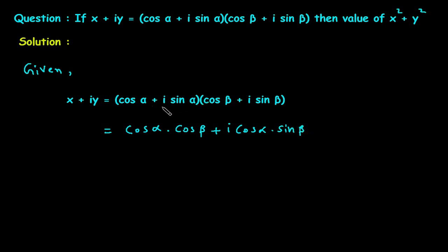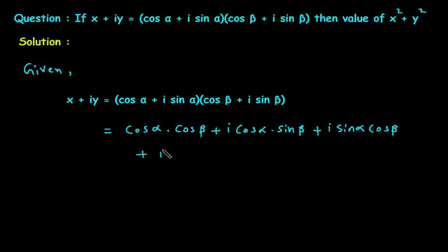Next, we multiply i sine alpha into cos beta, giving plus i sine alpha into cos beta. Then we multiply i sine alpha with i sine beta, giving plus i squared times sine alpha into sine beta.